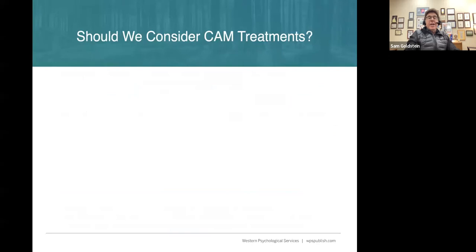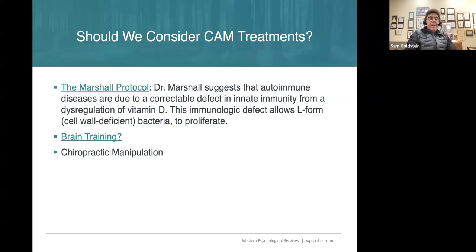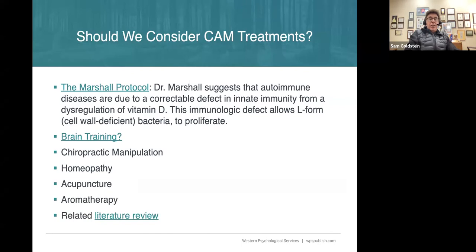Should we consider CAM — complementary and alternative medicine — treatments? There's something called the Marshall Protocol, developed by an engineer, not a mental health professional, proposing that an immunologic problem leads to bacterial proliferation. He has a protocol about what you should eat or not eat and what kinds of lights to expose yourself to. There are also links for brain training, chiropractic manipulation, homeopathy, acupuncture, cranial sacral therapy, and aromatherapy. There's a good literature review of CAM treatments you can look at.